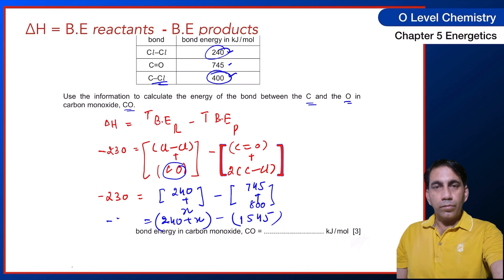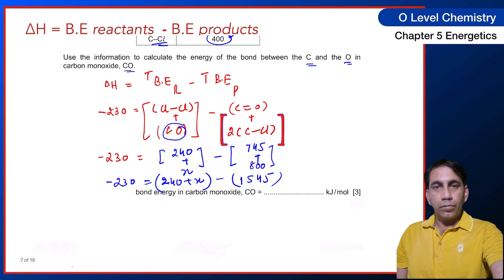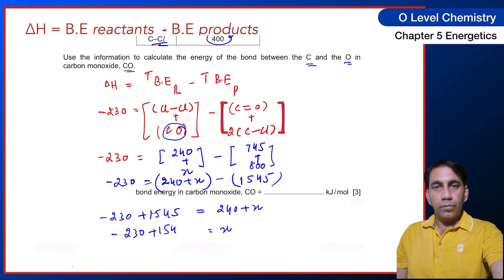Solving: minus 230 plus 1545 equals 240 plus x, so 1315 minus 240 equals x. Therefore x equals plus 1075 kJ/mol. The bond energy of C≡O in carbon monoxide is 1075 kJ/mol.